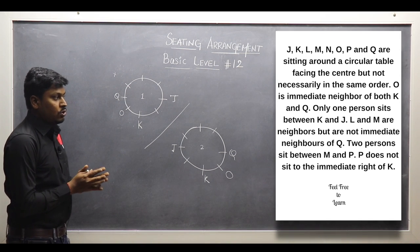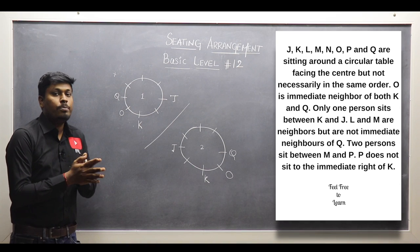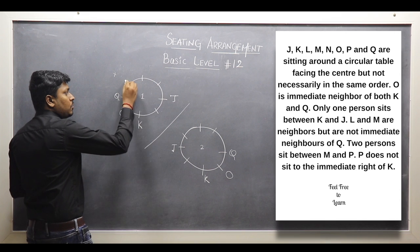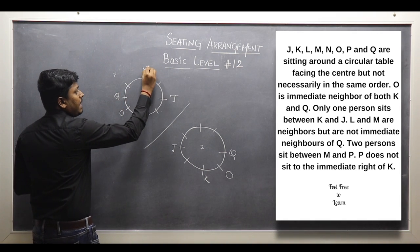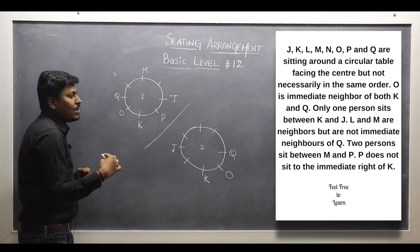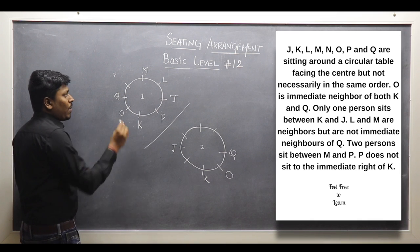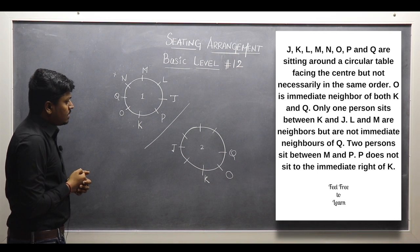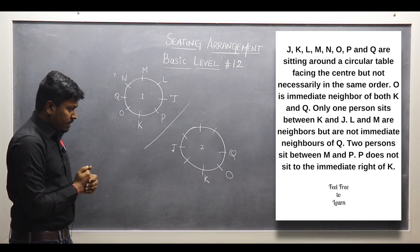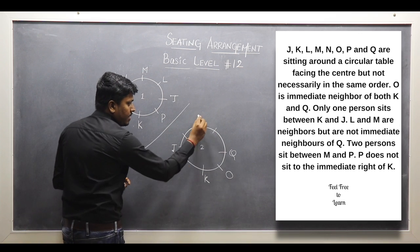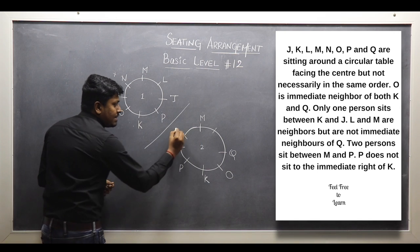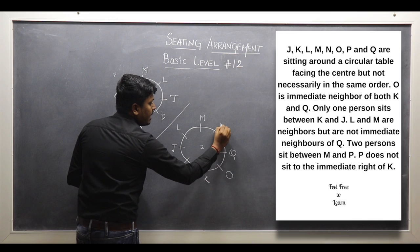Point number 4: two persons are sitting between M and P. If I fix M in a certain spot, counting two seats gives me the position for P. Since L and M are immediate neighbors, L is placed next to M. Only one letter remains — N — which fills the last spot. This logic applies to both possible diagrams, fixing M, P, L, and N in each.